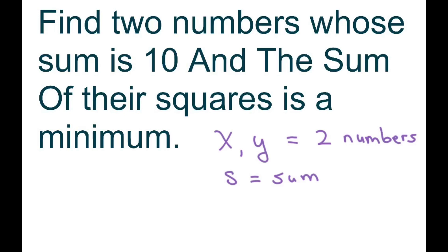So we're going to let x and y represent the two numbers. S is the sum. So we're going to set it up and we have x plus y equals 10 and our sum equals x squared plus y squared.